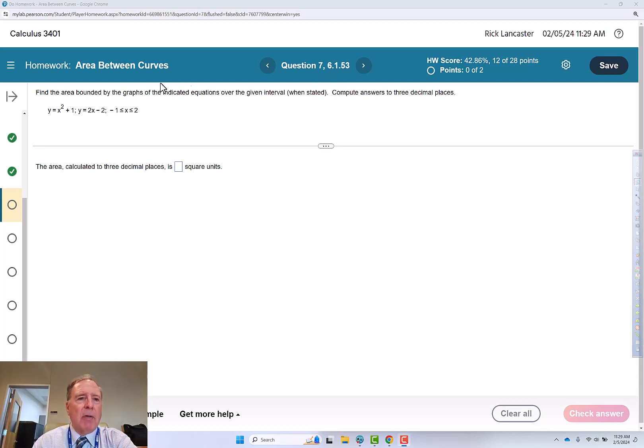This is question seven of the area between curves assignment. Find the area bounded by the graphs of the indicated equations over the given interval when stated. Compute the answers to three decimal places.